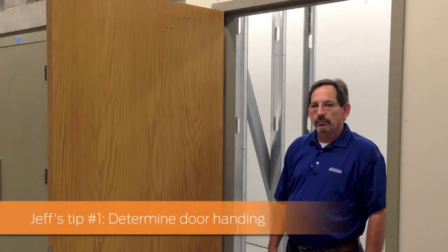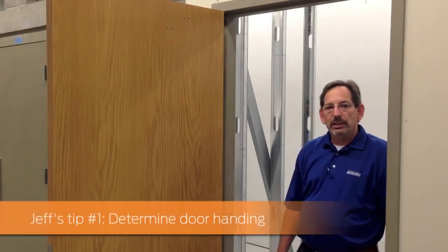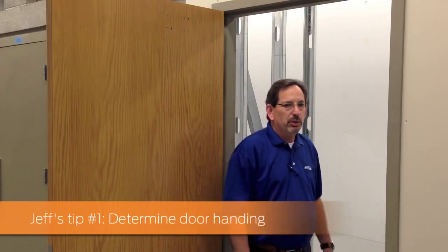Determine the handing of your door. To determine the hand of your door, first put your back to the hinges. If the door swings to the right, it's a right-hand door. If the door swings to your left, it's a left-hand door. For today's installation, we're using a right-hand door.